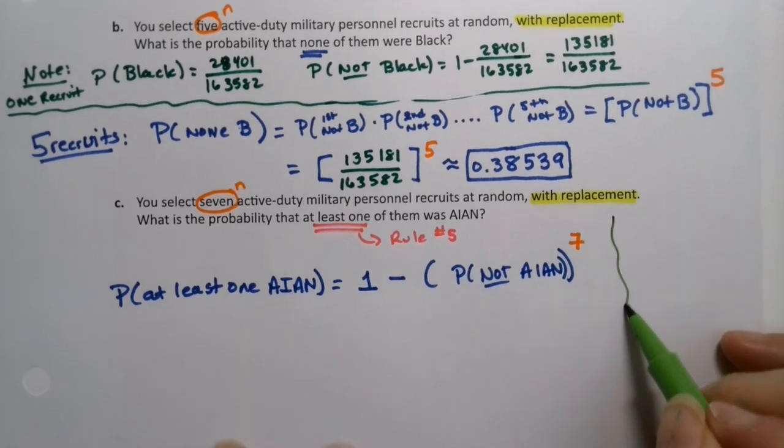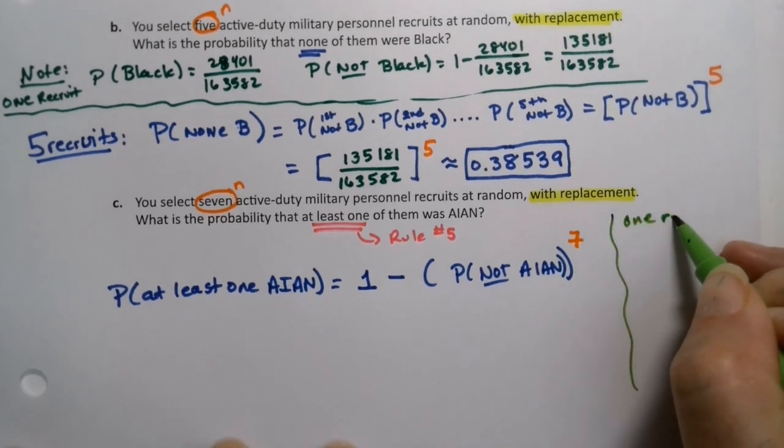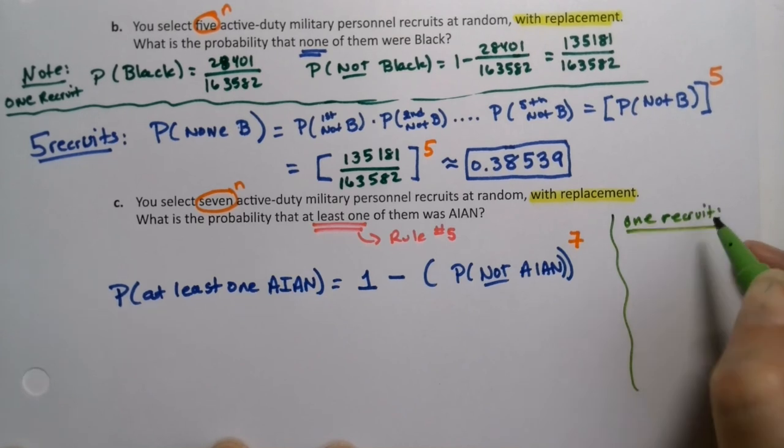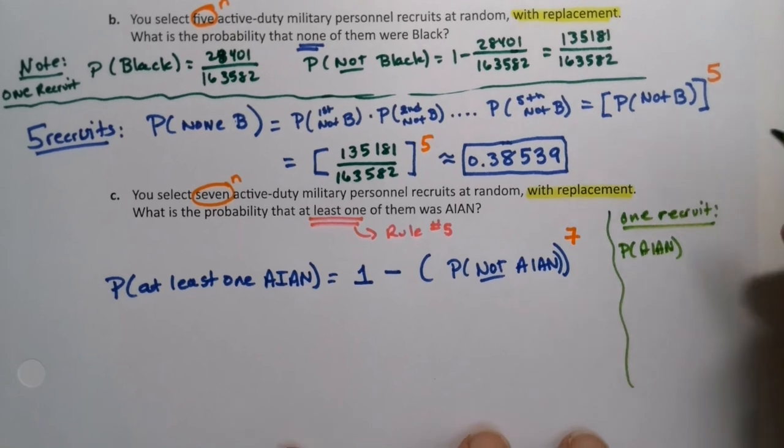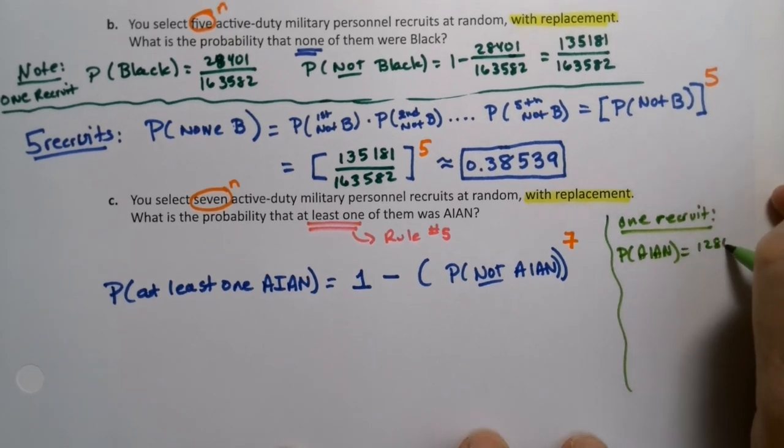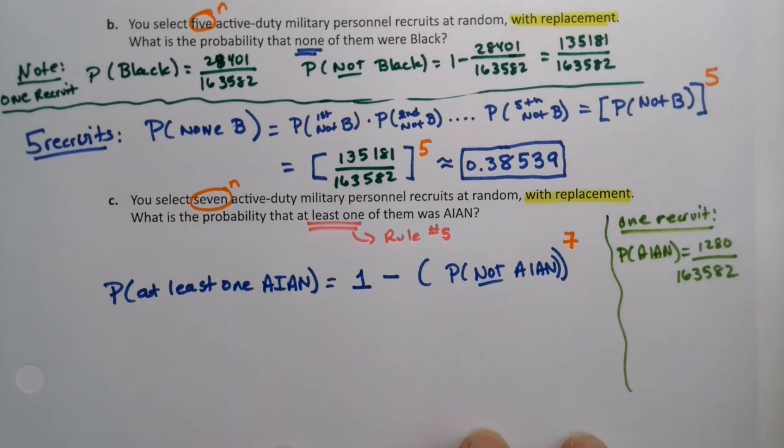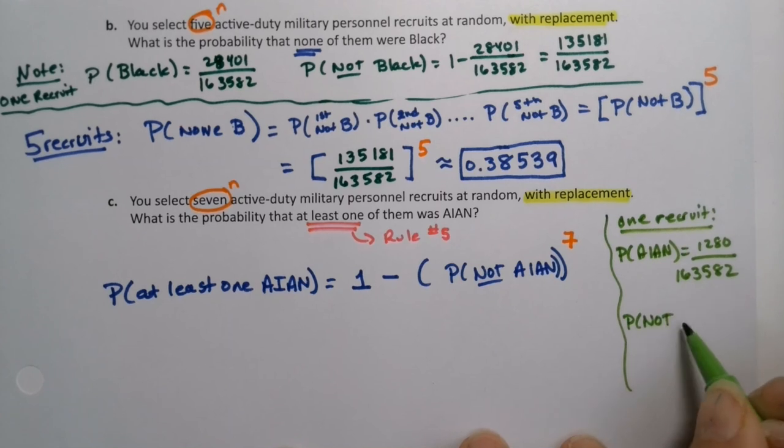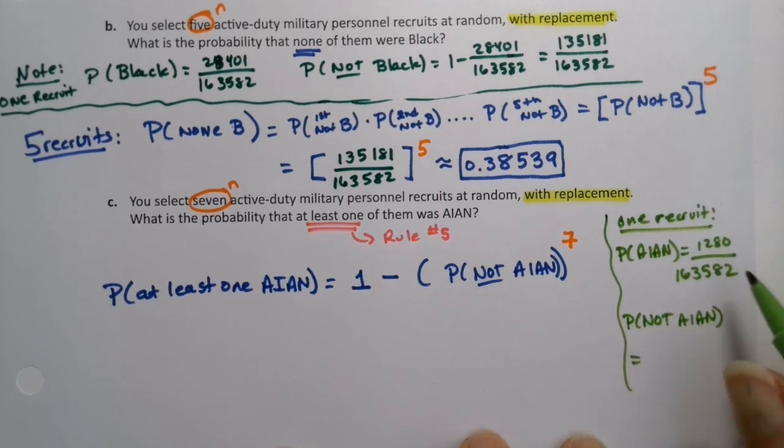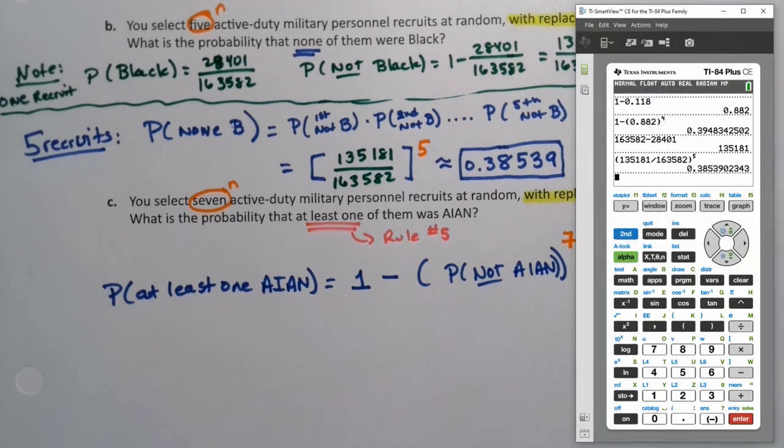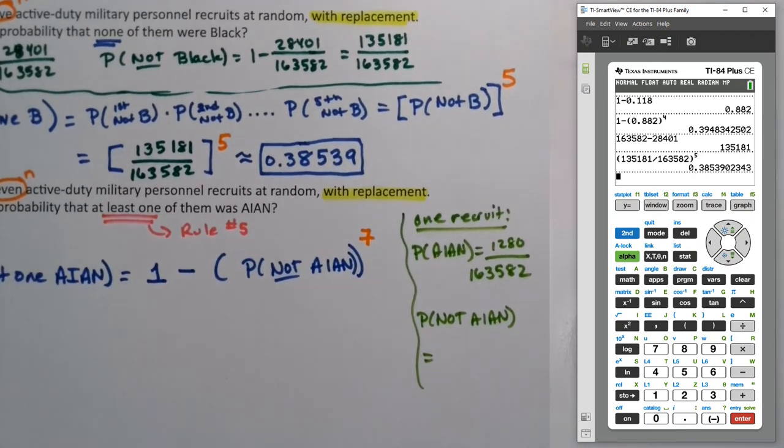And yet again, we have to go figure out some stuff on the side. So let's figure out for one, and these are recruits, so one recruit. What's the probability of AIAN? That would be 1,280 out of 163,582. So what's the probability of not being AIAN? That would be all the other non-American Indian, Alaskan Native. So if I took 163,582 and I subtract away the 1,280 American Indian native Alaskan recruits, I get 162,302.